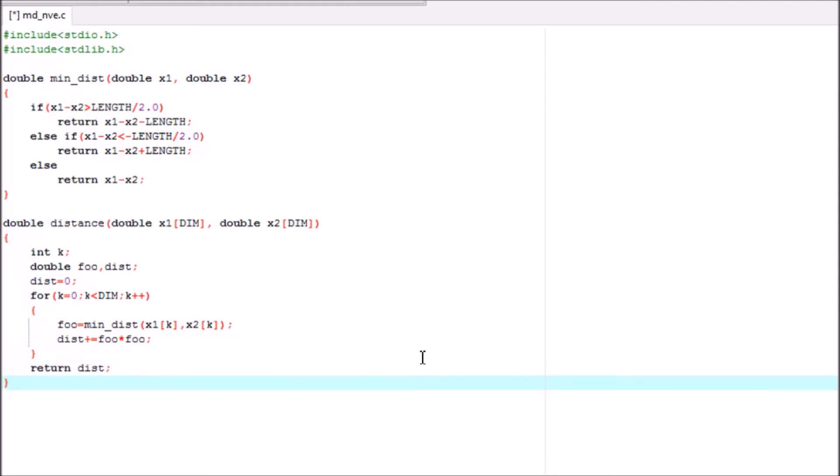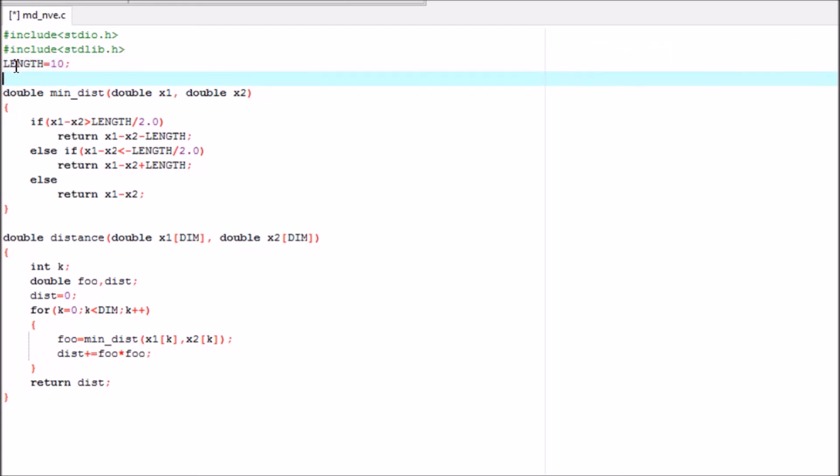As you noticed here, I haven't defined what is length and what is dim. So let's define that. Length, for now, let's take it as 10, and then let's define dim as 3. I have to even find how at all this is double. And this is it. I am pretty much done.